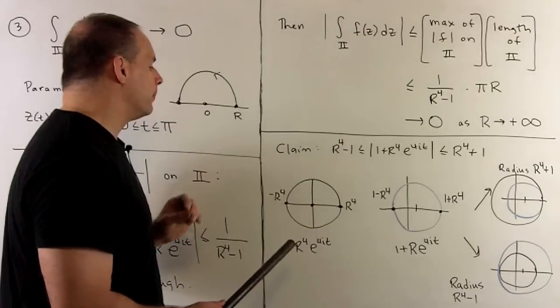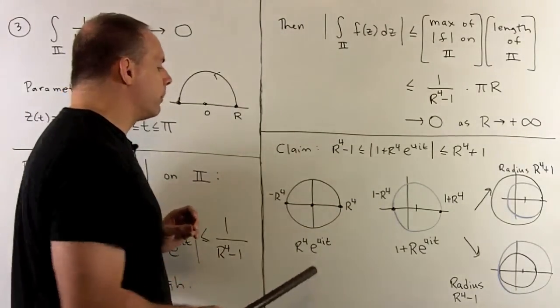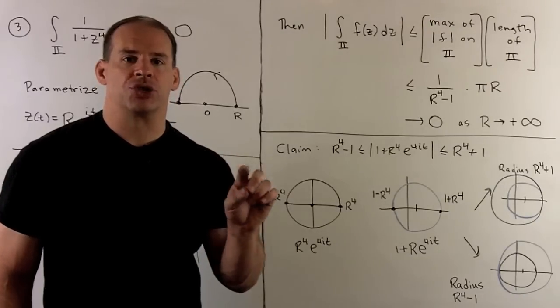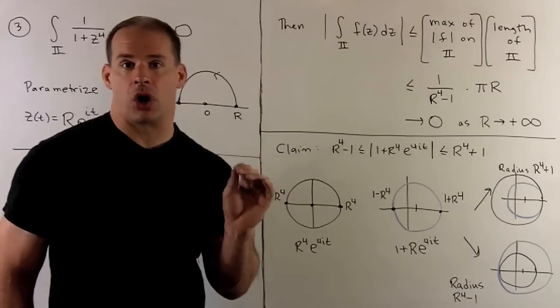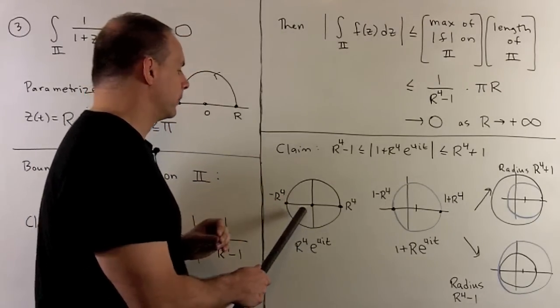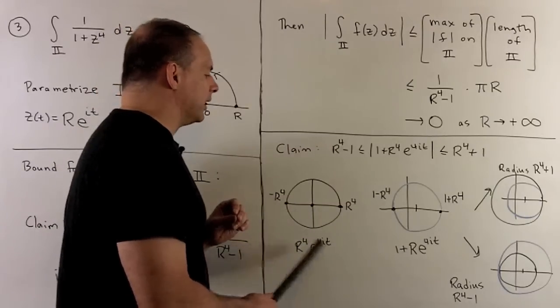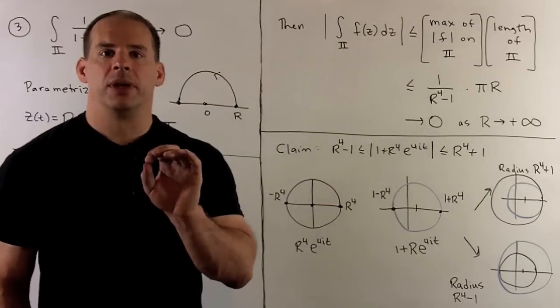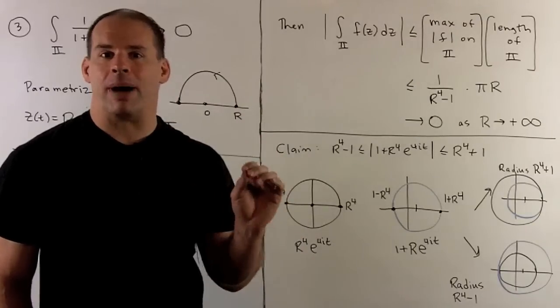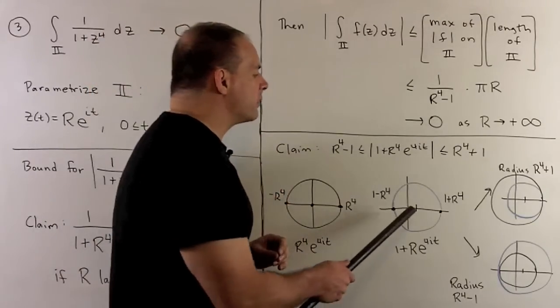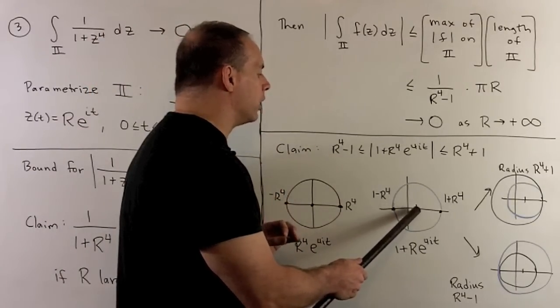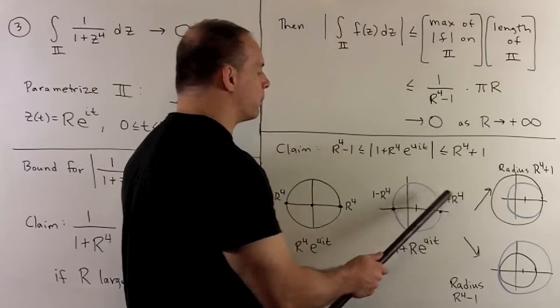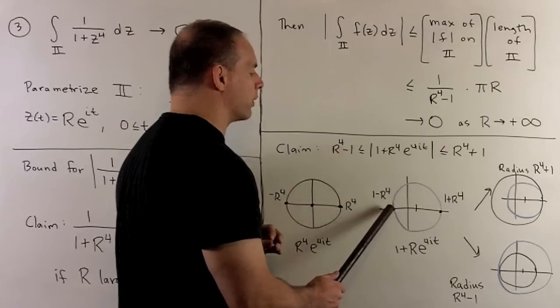Now, to start, if we take all points of the form r to the 4 e to the 4 i t, we have a circle centered at the origin of radius r to the 4. If we add 1 to each of these points, that 1 is going to go into the real part, so we're shifting everything to the right by 1. So, now I have a circle centered at the point 1. Two other points in the circle, 1 plus r to the 4th and 1 minus r to the 4th.